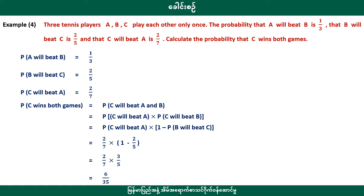Three tennis players: A, B, and C. They play each other only once. The probability that A will beat B is 1, but B will beat C.